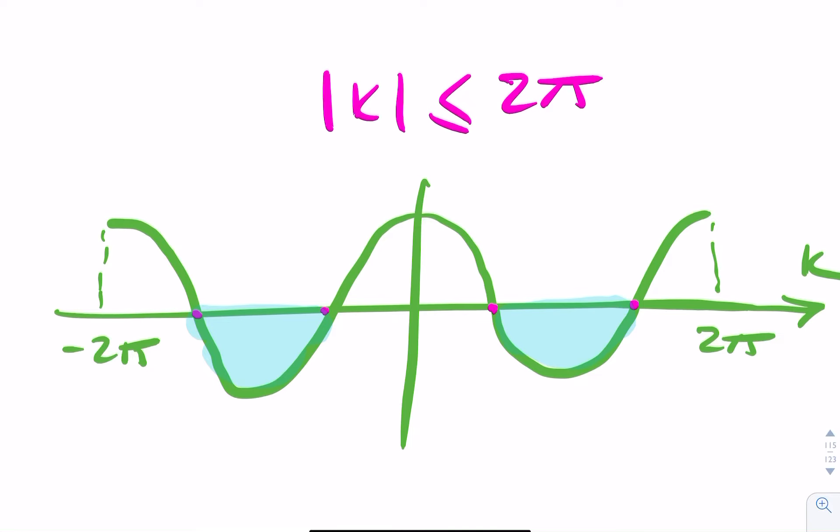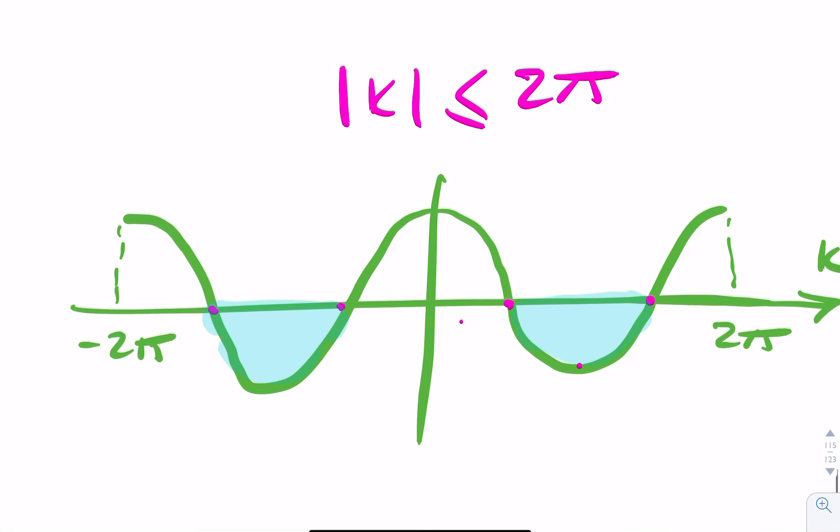If that's 2 pi, then that's pi, and that there is pi over 2, and that's 3 pi over 2, and that's minus 3 pi over 2.